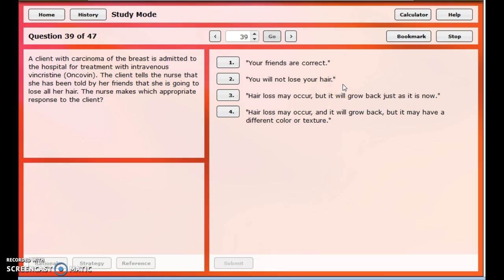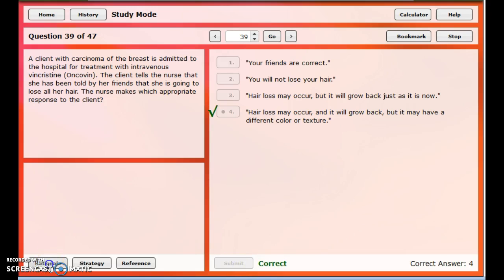Your friends are correct. That sounds kind of cold. You will not lose your hair. That's a big, fat lie. Hair loss may occur, but it will grow back just as it is now. Not quite. And, of course, our fourth choice, when in doubt, choose the longest one, right? Hair loss may occur, and it will grow back, but it may have a different color or texture. To some people, that's a small comfort to think that when my hair grows back, maybe it'll be a different color or something. Some people like to look forward to that. But it just sounds like the best answer of all of those.